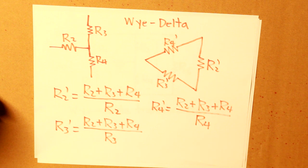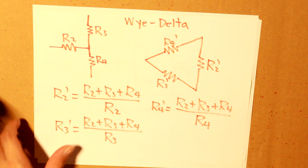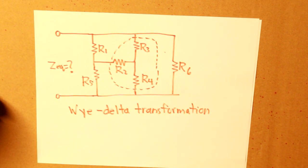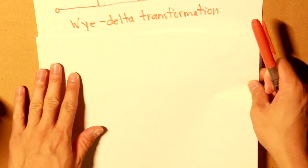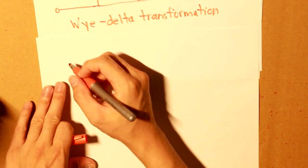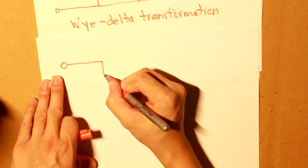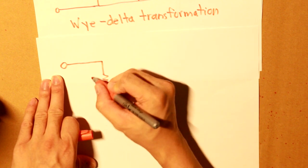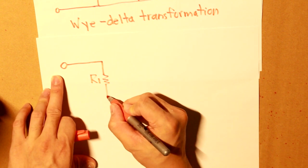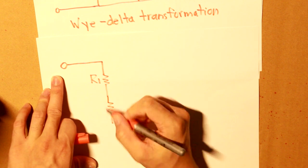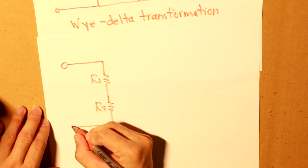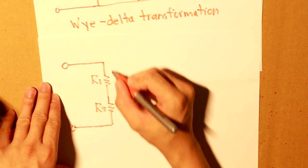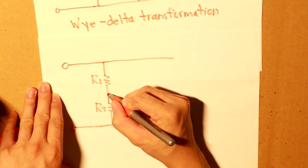So now that we got that, let's see how our new resistance would look like. So let's draw it out, shall we? So we have R1 here, nothing has changed because we didn't change anything for this resistor either for R5.